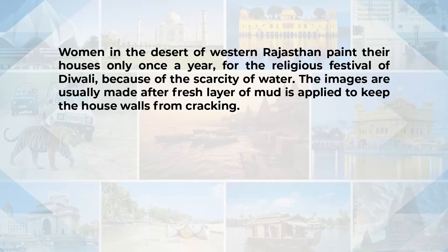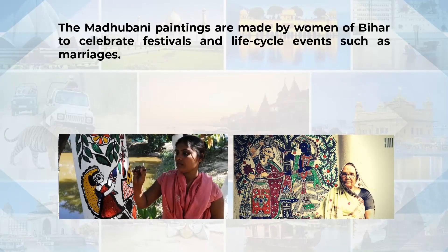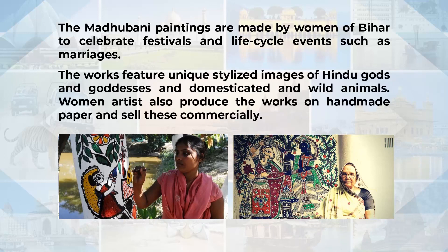The images are usually made from a fresh layer of mud applied to keep the house walls from cracking. Peasant women in Odisha decorate their mud houses with images of leaves, vines and flowers made with white rice paste applied with their fingers. Images such as the lotus vine, a symbol of the goddess of protection, are invoked to keep evil spirits from entering the house. The Madhubani paintings are made by women of Bihar to celebrate festivals and life cycle events such as marriages, featuring stylized images of Hindu gods and goddesses and animals.